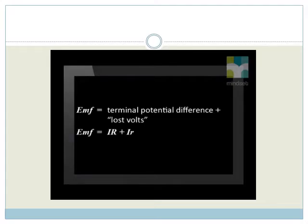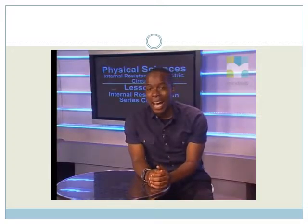From this, we can derive the equation EMF is equal to terminal potential difference plus lost volts. EMF equals current times external resistance plus current times internal resistance. Now, let's look at how we would use this equation in a calculation.